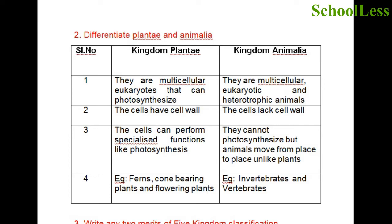Differentiate between Plantae and Animalia. Plantae refers to the plant kingdom; Animalia refers to the animal kingdom. Plants are multicellular eukaryotes that can photosynthesize using chlorophyll and sunlight to produce their own food. Animals are multicellular, eukaryotic and heterotrophic. Plant cells have a cell wall whereas animal cells lack a cell wall. Animals can move from place to place unlike plants. Examples of Plantae: ferns, cone-bearing plants, flowering plants. Examples of Animalia: invertebrates and vertebrates.